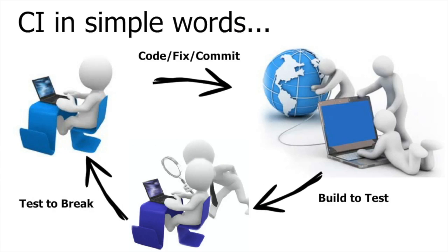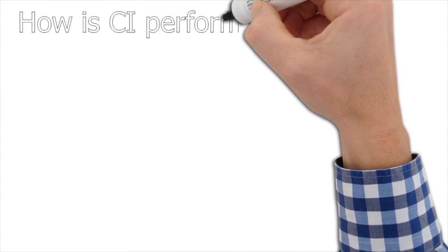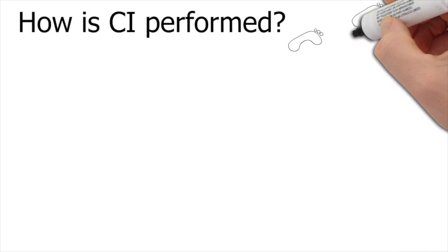The quality analysis team tests it, finds issues, and reports back to the development team, which in turn follows the same iterative model. It goes from developers to DevOps, DevOps to testers, and it is a continuous approach that keeps on running until we have a stable product.